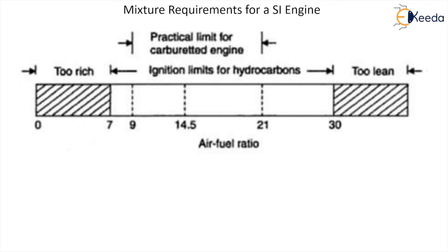Types of mixture: too rich and too lean. If you see the parts of air, they go on changing. Starting from 14.5, if you go to 9, it will be 9 parts of air and 1 part of fuel; if you go to 7, it will be 7 parts of air and 1 part of fuel. The part of fuel remains the same but the parts of air reduce, which indicates the concentration of fuel is increasing. When the concentration of fuel increases and parts of air decrease proportionately, the mixture is called a rich mixture. On the other hand, if you go from 14.5 up to 21:1, the parts of air increase while the part of fuel remains constant at 1, indicating the concentration of fuel is going on reducing — that is called a lean mixture.